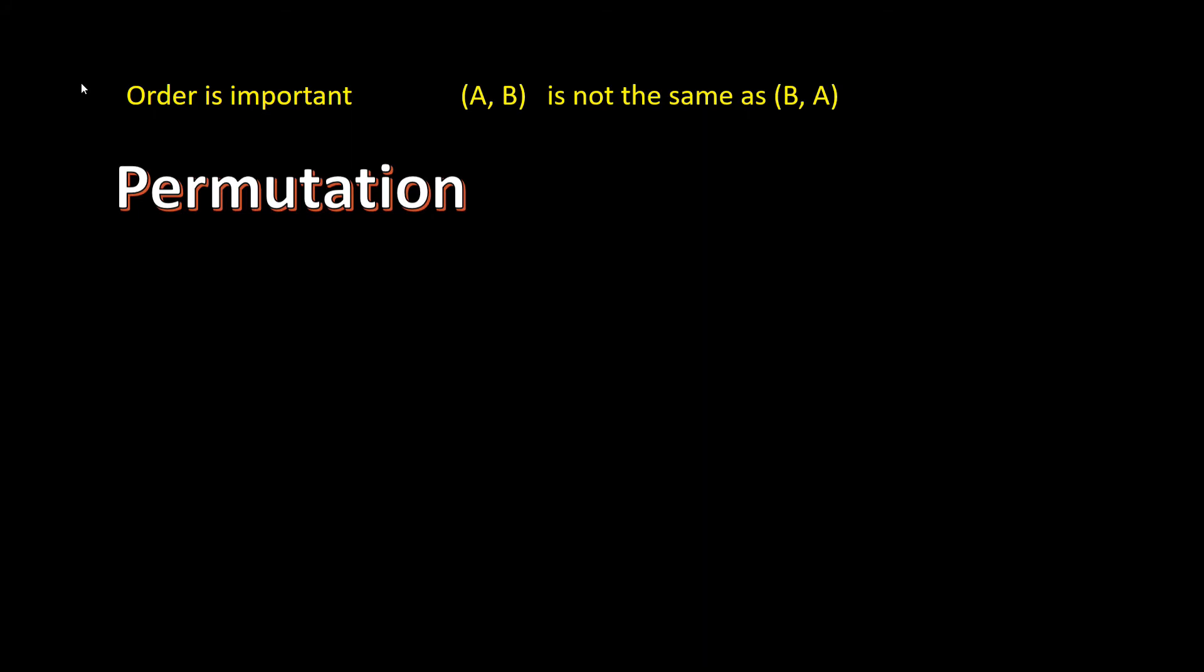Now let's take a look at permutations. With a permutation, the order does matter. So if the first paper chosen is A and the second is B, that's one possible outcome. But then if the first paper is B and the second is A, that's not the same thing. So there are many more possible outcomes when we use permutations rather than combinations, since the order of the outcome is important.